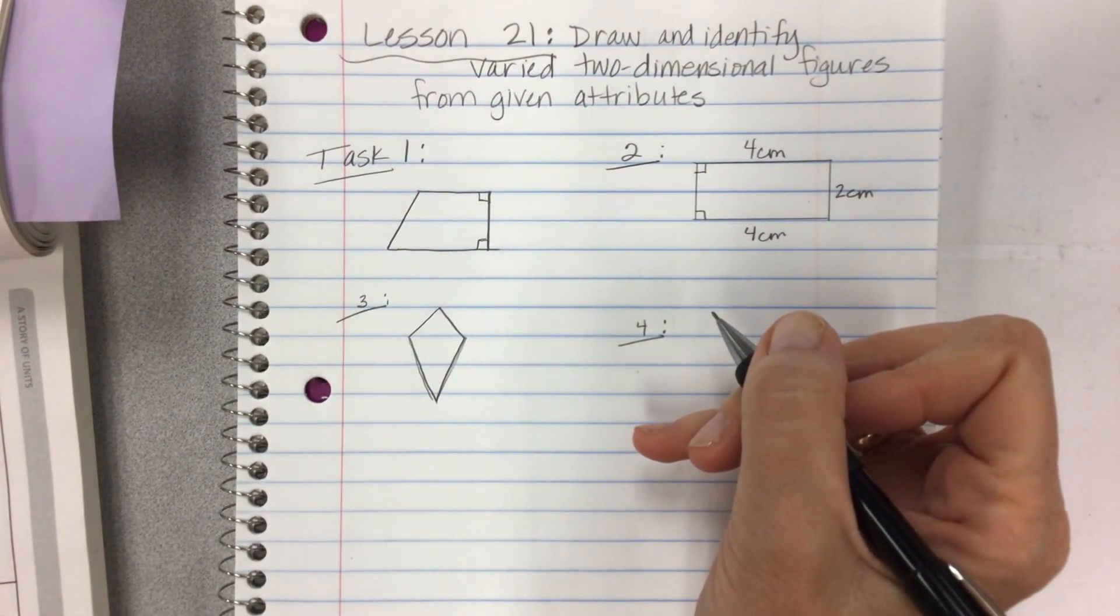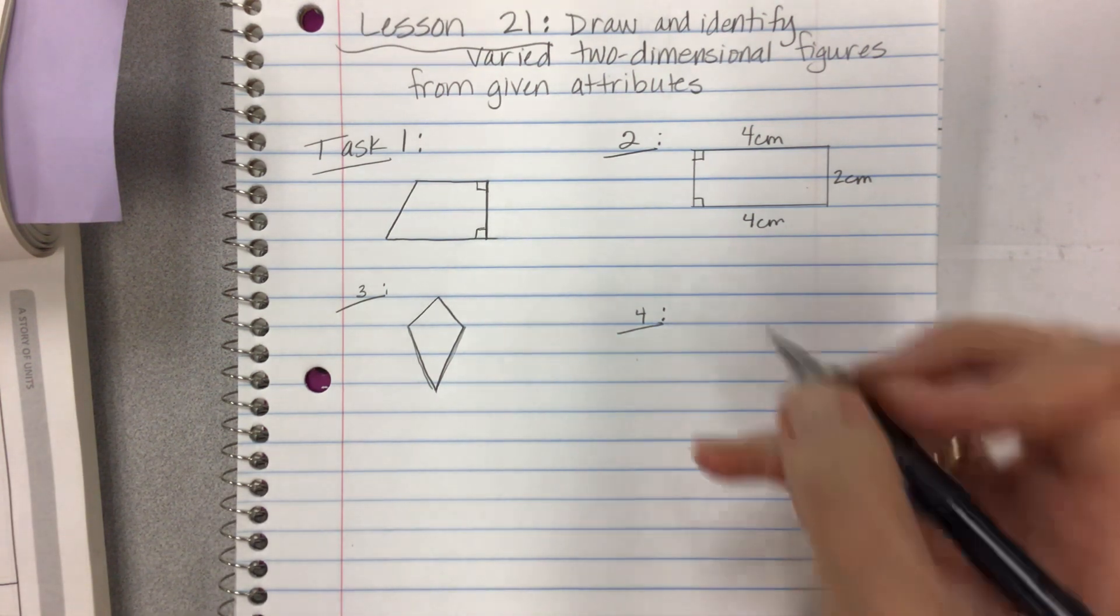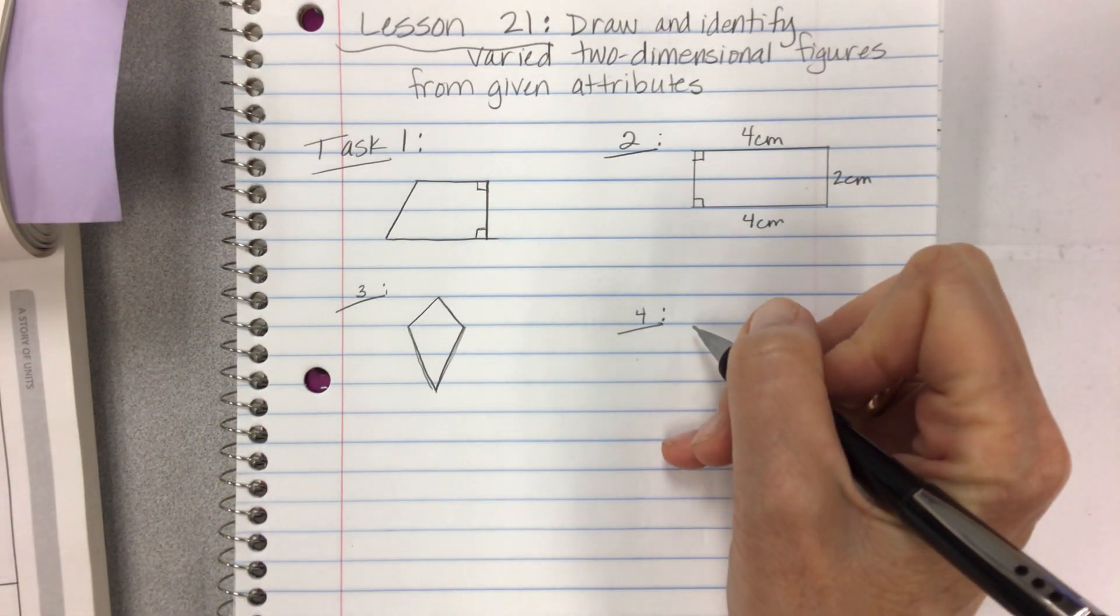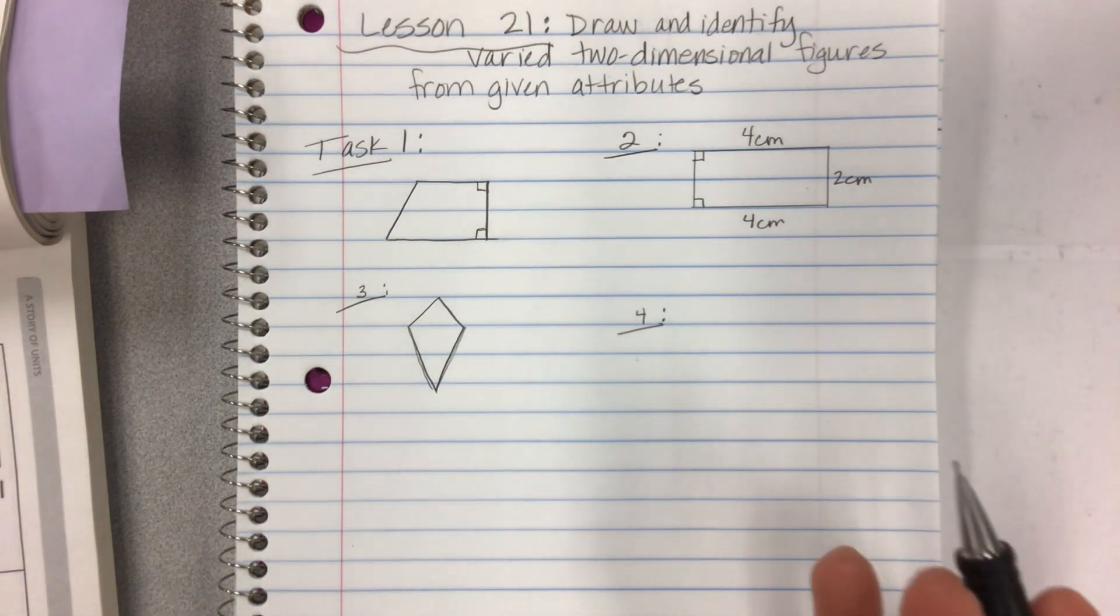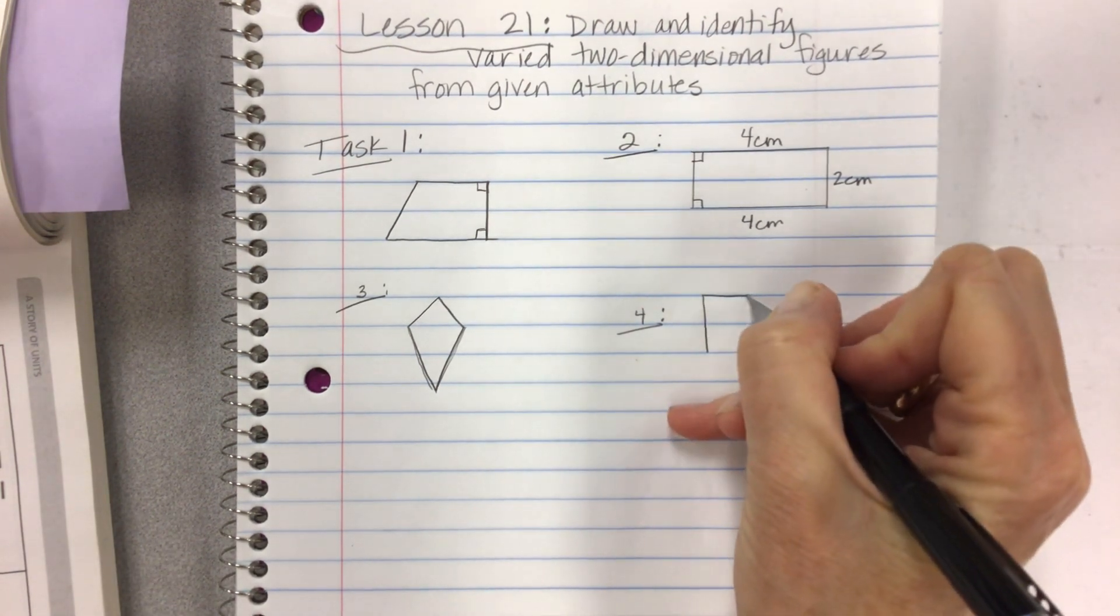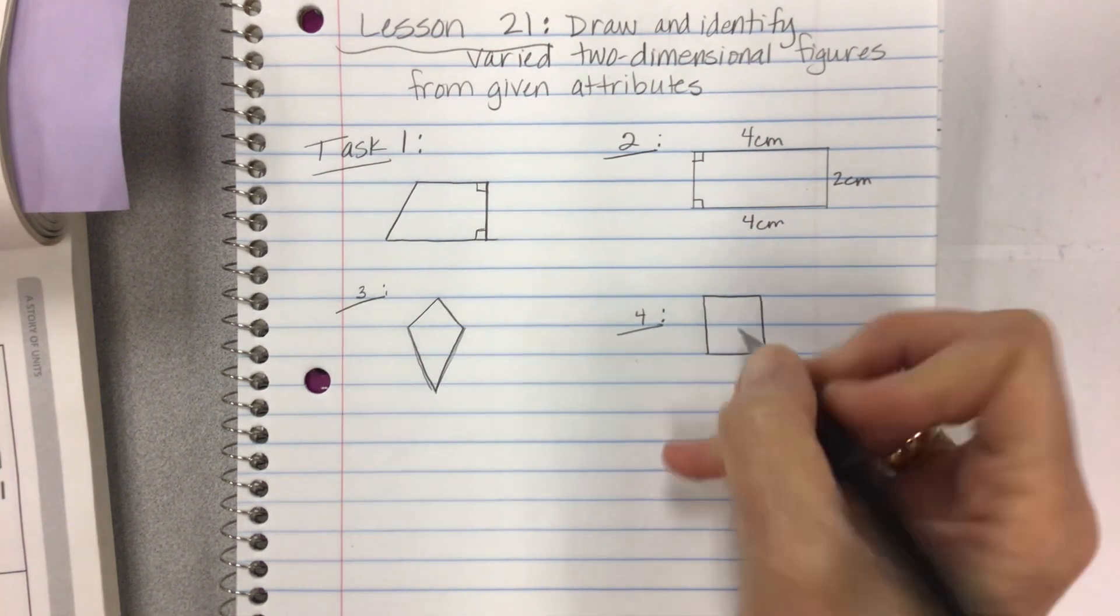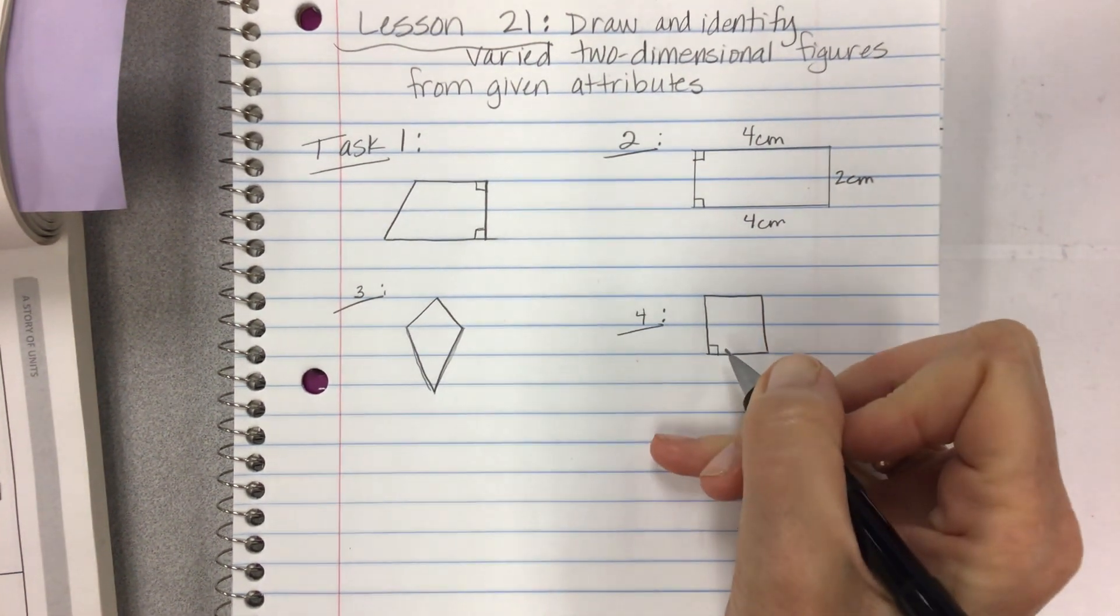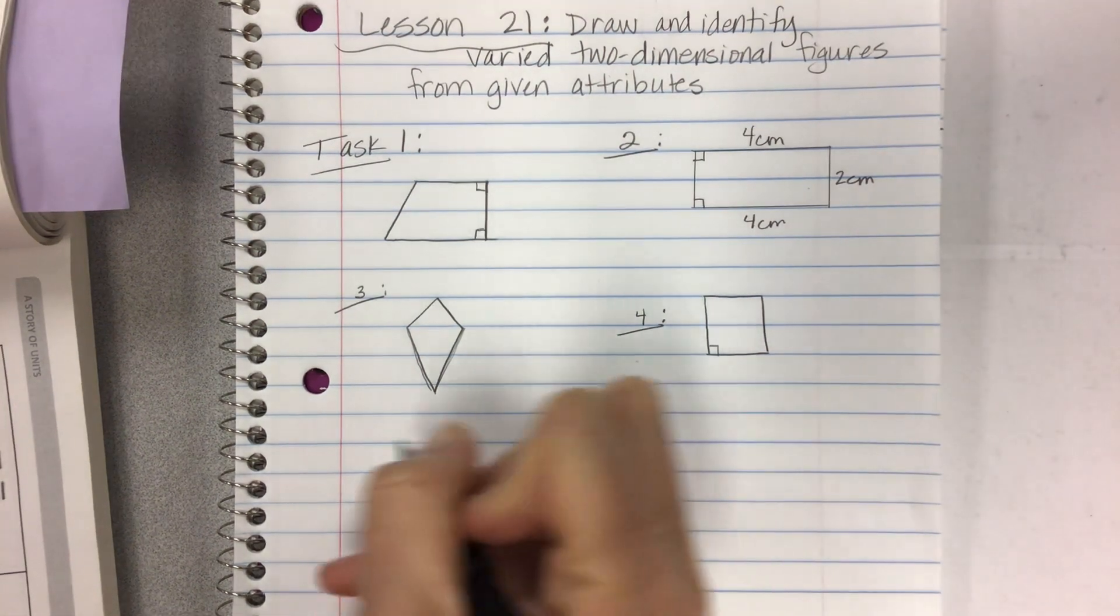Task four, draw a rhombus with right angles. Now when you have a rhombus, the purpose of this activity is to make you think about the attributes of these shapes. So if you're drawing a rhombus with right angles, the name for it is a square. So a rhombus has four sides the same length, and if it has right angles, then it's a square.